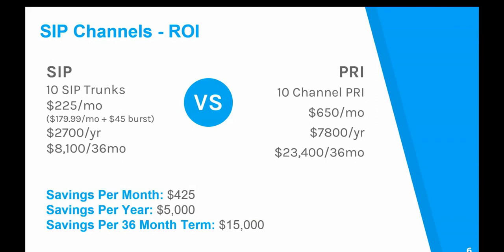Cost savings and improved technology is typically the number one priority for businesses. Let's use a company with 50 extensions — 50 people, 50 phones. Traditionally this customer would typically need a 10 channel T1 PRI service, which allows 10 simultaneous calls in and out. For most of the time they peak at those 10 calls, but there are times they get more than 10. If they try on the 11th line, they simply won't get through. A 10 channel PRI can range from $500 to $1,000 per month depending on the term. Here in Vancouver, British Columbia, a 10 channel PRI is usually around $650 a month based on a three year contract.